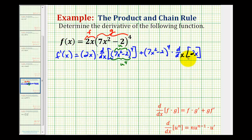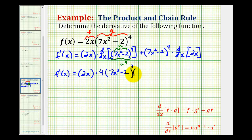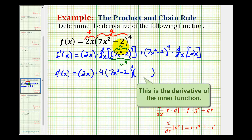And then of course the derivative of 2x is just 2. So let's write out the next step. We're going to have 2x times the derivative of u to the fourth. Well, that will be 4u to the third, but instead of writing u to the third, remember u is equal to 7x squared minus 2, times u prime, and u prime is the derivative of 7x squared minus 2, which would be 14x.